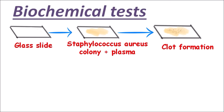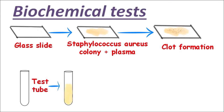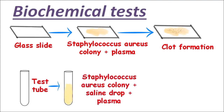Now let's discuss the tube coagulase test, which is done in a test tube. We take Staphylococcus aureus colonies emulsified in one milliliter of diluted plasma and incubate at 37 degrees Celsius in a water bath. After incubation, clumping is observed due to free coagulase enzyme, which binds to coagulase-reacting factor and activates prothrombin, triggering the coagulation cascade and resulting in clot formation.